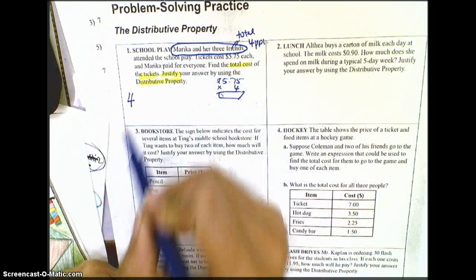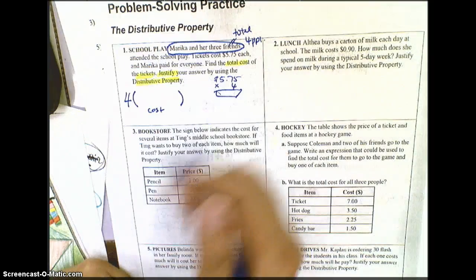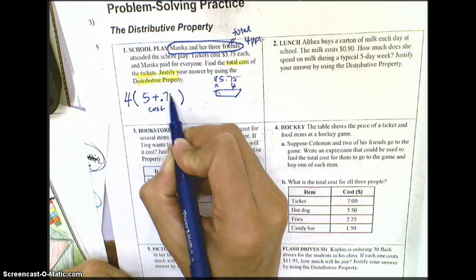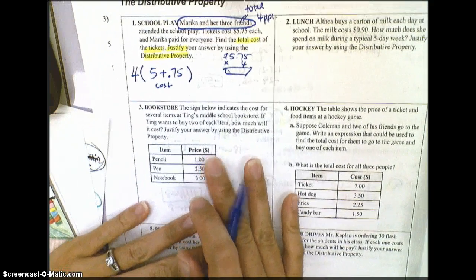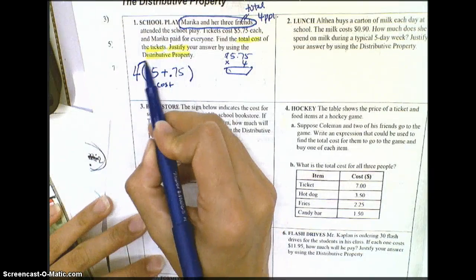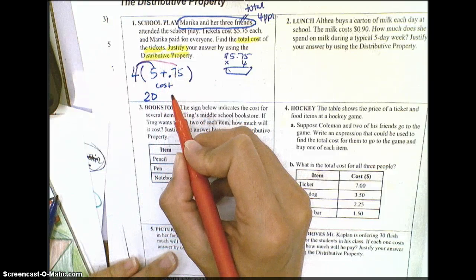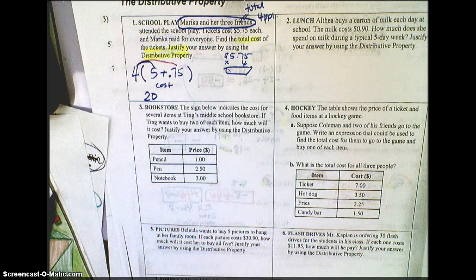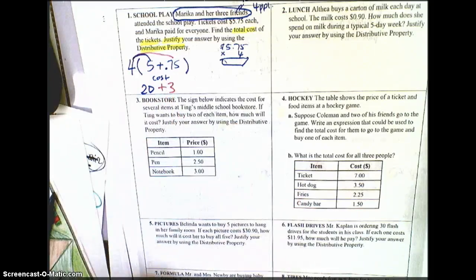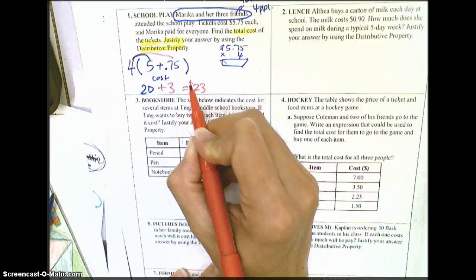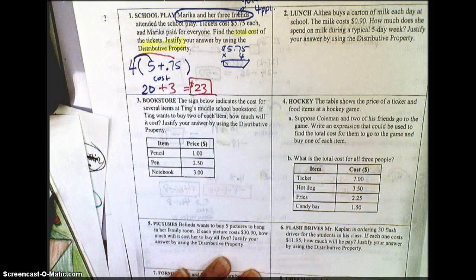But when we're looking for the answer, we do want to use a distributed property. So that means we can take the four friends and multiply that with the cost of the tickets, which are $5.75. We can divide the cost of it into $5 plus 75 cents. 0.75 would mean 75 cents. And when I actually go to multiply that and distribute, then I would be distributing 4 times 5, which is 20. Then I would distribute 4 with the 75 cents, which gives me $3. So together, that would cost $23. Now, that would be how much their total cost of tickets would be. And as you can see, we justify it by using the distributive property.